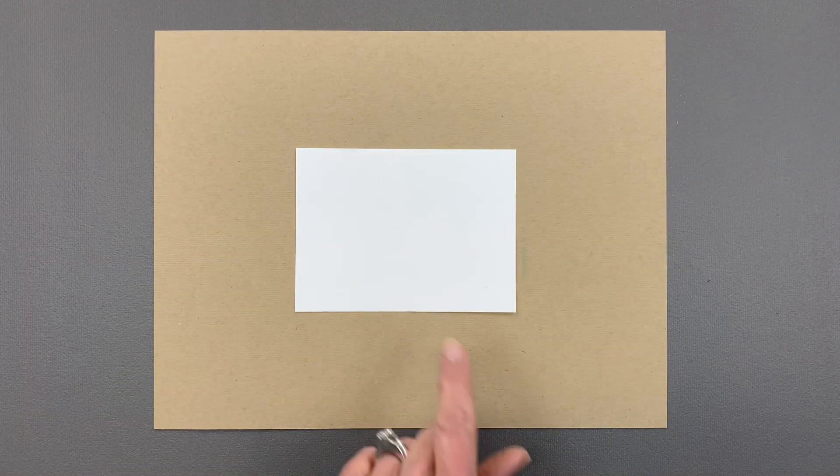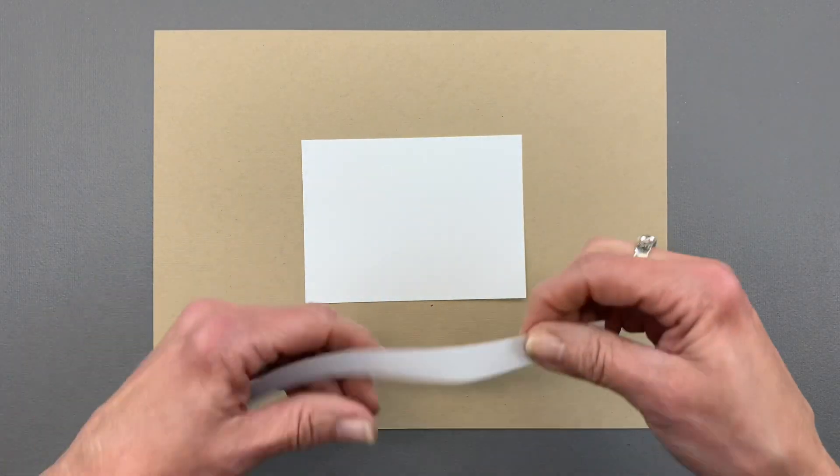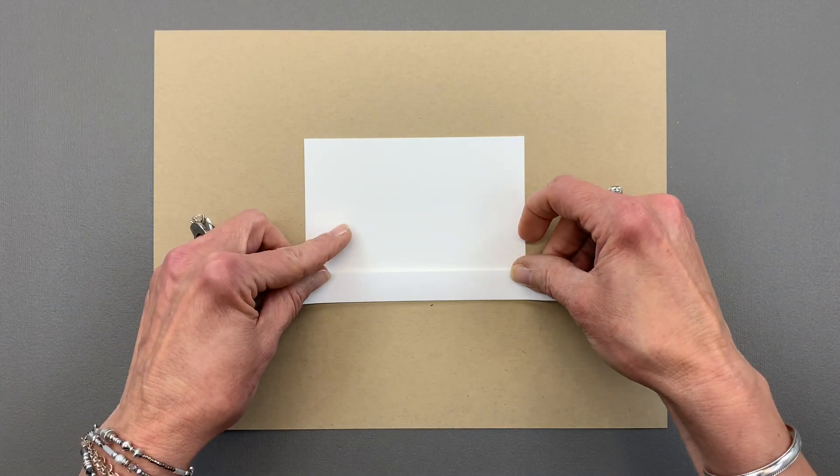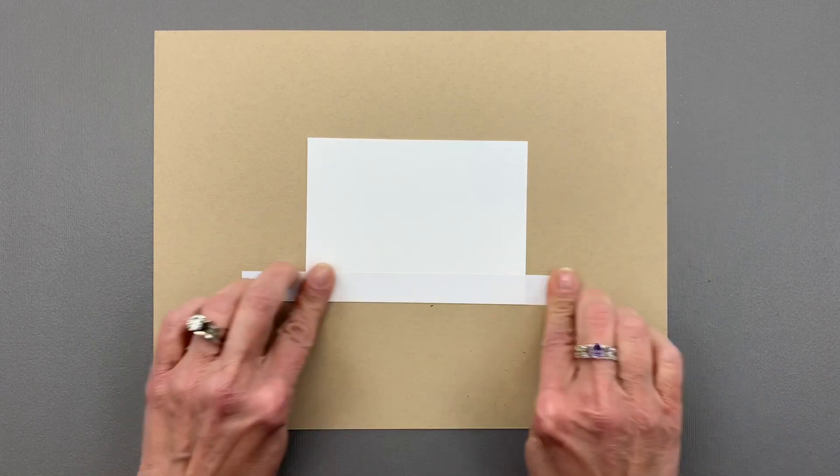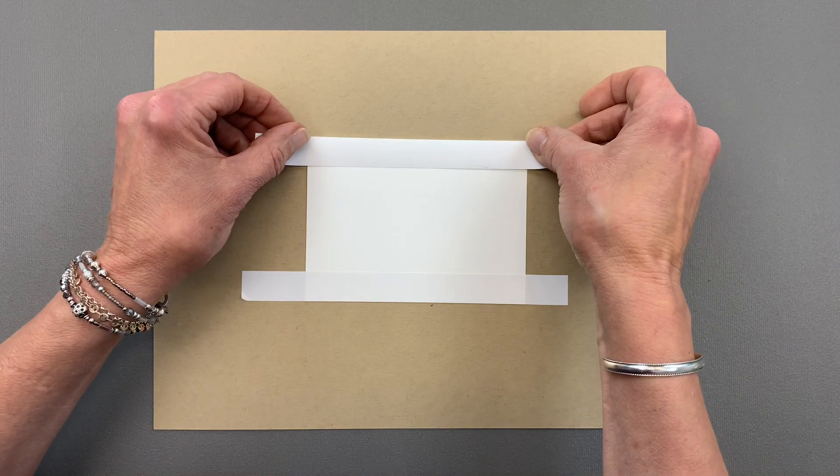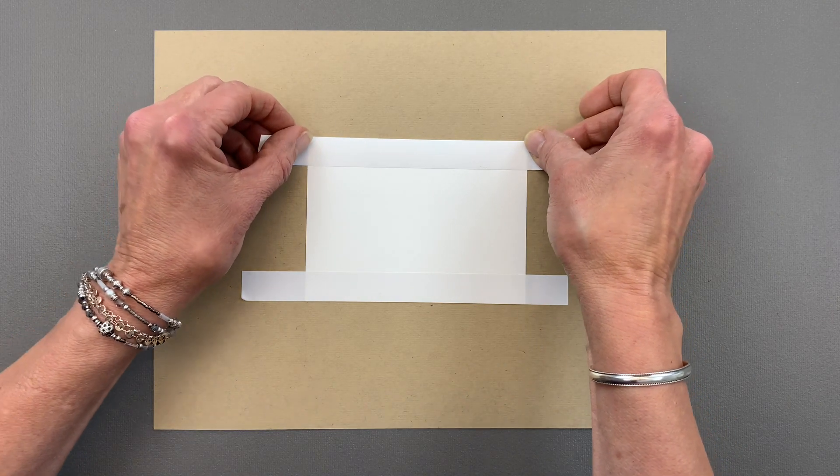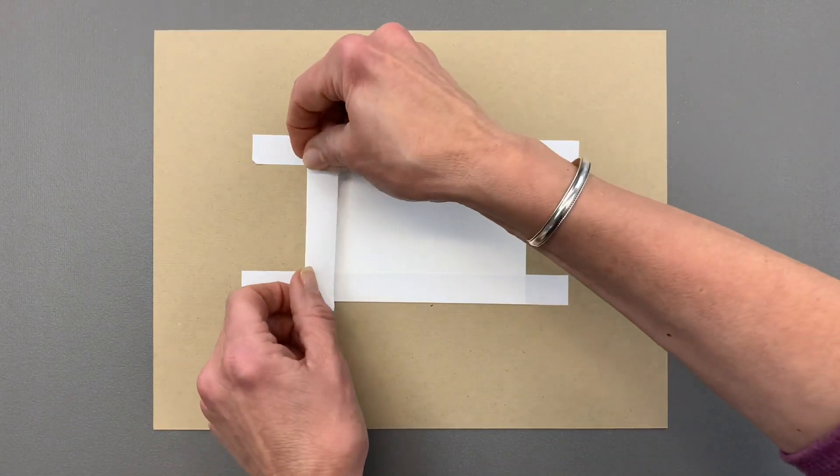I started with a piece of cardstock that measures three and a half inches by four and three-quarter inches. Then I cut my Masking Magic masking paper down to five-eighths of an inch strips and I'm placing these all around the edges of this piece of cardstock. This is going to give me a nice wide border.